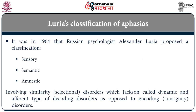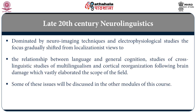In 1964, Luria came up with a classification of aphasia: a three-way classification of sensory, semantic and amnestic types, drawing on Jakobson's similarity or selectional disorders — which Jackson called dynamic and afferent types of decoding disorders — as opposed to encoding or contiguity disorders. Basically there is a coming together of these ideas in typologizing aphasic disturbances.